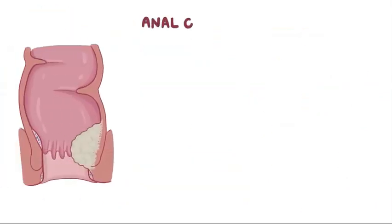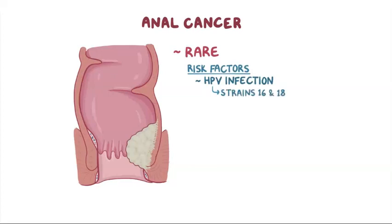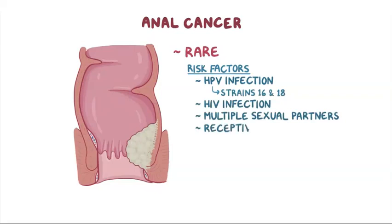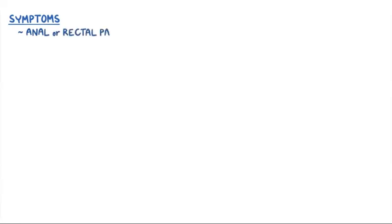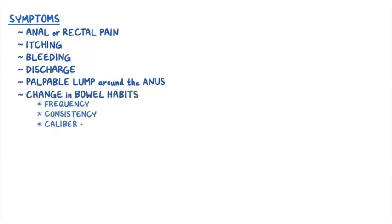Finally, there's anal cancer, which is rare. Risk factors include human papillomavirus or HPV infection, especially strains 16 and 18, HIV infection, having multiple sexual partners, receptive anal intercourse, and cigarette smoking. Symptoms include anal or rectal pain, itching, bleeding, discharge, a palpable lump around the anus, and a change in bowel habits like frequency, consistency, or caliber of the stools.